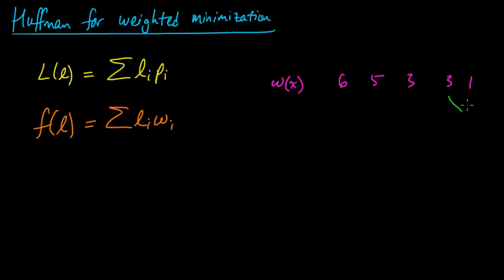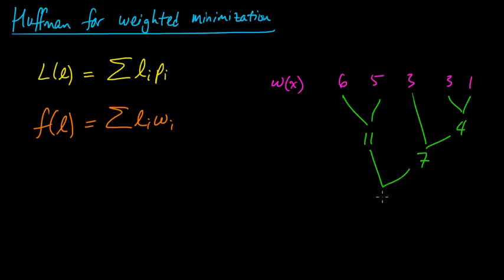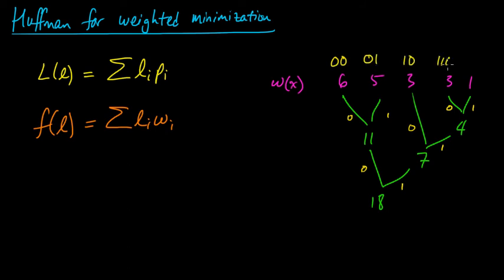We just do the same Huffman procedure. The two minimal weights are one and three — we combine them to get four. Now three and four are minimal, giving seven. Six and five are minimal, giving eleven. We combine the last two to get eighteen. Then we assign codewords in the same way using 0s and 1s. The resulting codeword lengths are guaranteed to minimize this function over all uniquely decodable codes.